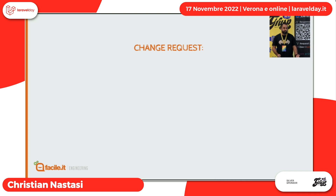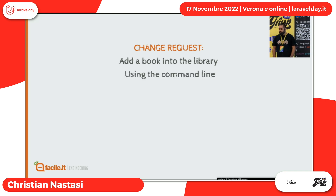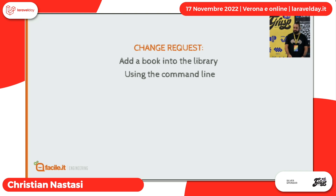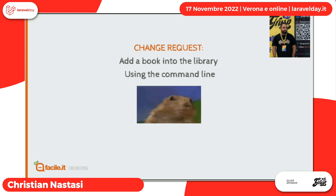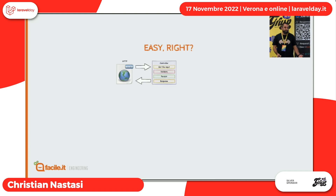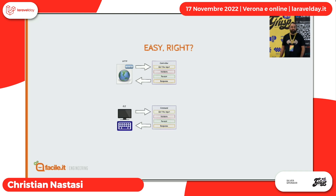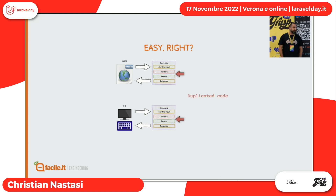Però ci arriva la prima richiesta di cambio: voglio sempre aggiungere un libro nella libreria, ma usando la command line, perché ad esempio ci arrivano un blocco di 100.000 libri, devo fare una batch. Semplice no? Abbiamo fatto questa cosa con il controller, facciamo la stessa cosa anche con la command line. Piccolo problema: codice duplicato. Codice duplicato che potrebbe anche variare leggermente, il che vuol dire che da una parte si comporta in un modo, dall'altra in un altro, e quindi non abbiamo consistenza di comportamento.